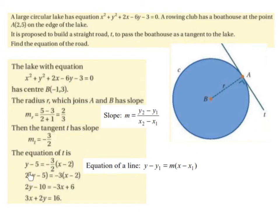Then multiplying out the brackets, 2 by y is 2y, 2 by minus 5 is minus 10, equals minus 3 by x is minus 3x, minus 3 by minus 2 is plus 6.